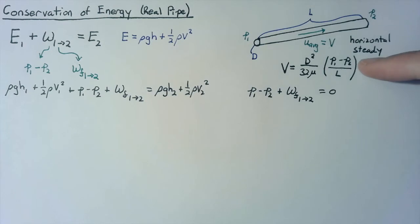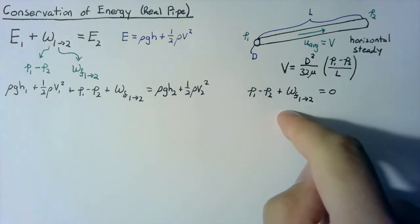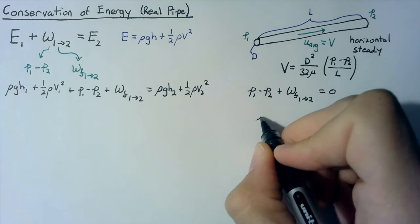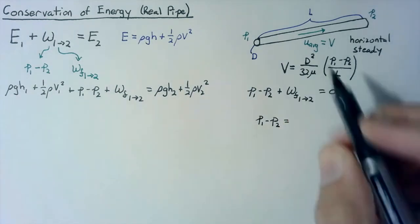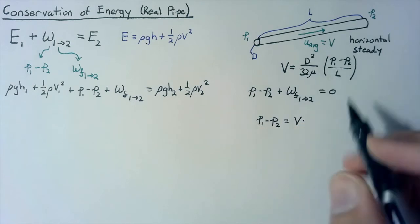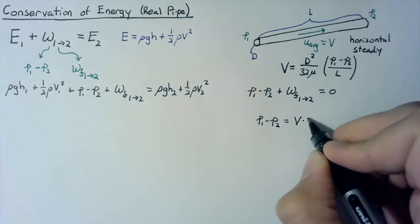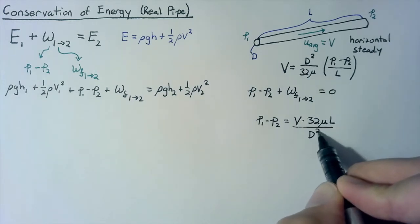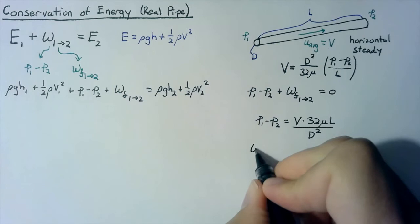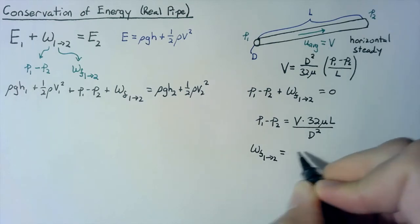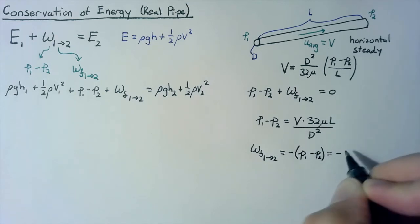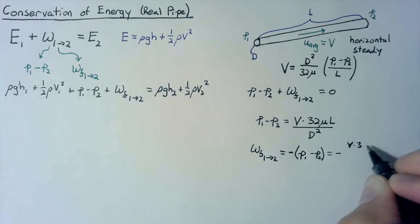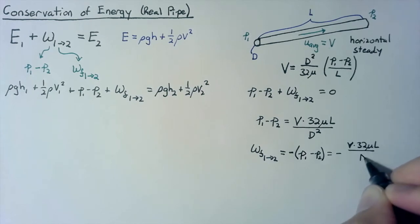So what we'll do is we'll isolate this P1 minus P2 and then plug that into our equation below. So P1 minus P2 will be equal to V multiplied by everything in the denominator, 32 multiplied by mu multiplied by L and then divided by D squared. So the work done by friction between these two states is going to be equal to a negative P1 minus P2 or a negative V times 32 mu L over D squared.